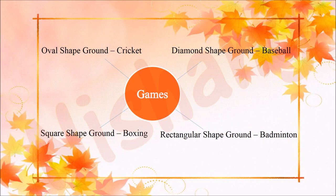For the shape and size of the field: Cricket has an oval-shaped ground, Baseball has a diamond-shaped ground, Boxing has a square-shaped ground, and Badminton has a rectangle-shaped ground. You can add new games or make changes to any classification if needed.